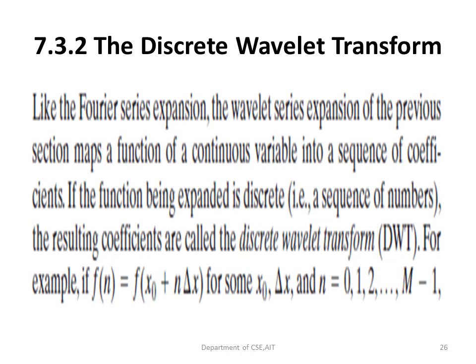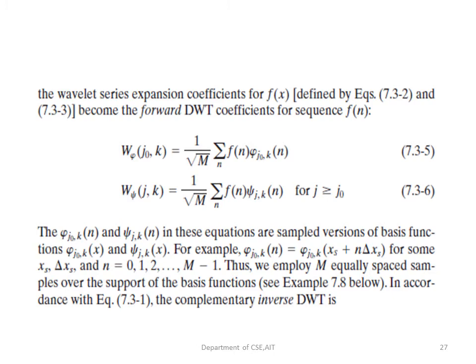Like the Fourier series expansion, we can also have the discrete wavelet transform. The wavelet series expansion maps a function of a continuous variable into a sequence of coefficients. If the function is discrete, the resulting coefficients will also be discrete — this is called the discrete wavelet transform (DWT). If f(n) = f(x₀ + n Δx) for some x₀ and Δx, with n = 0 to M−1, the wavelet series expansion coefficients become the forward DWT coefficients for the sequence f(n).